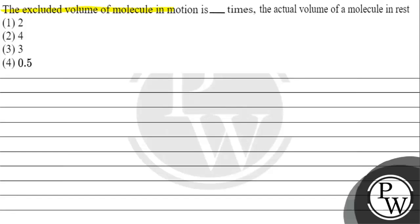The question says: if the excluded volume of a molecule in gas times the actual volume of a molecule in gas equals 0.1, with options having 4, r, 3, R, T, or constant at 0.5, and P to accept.